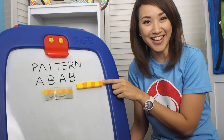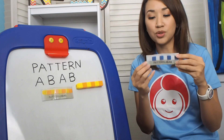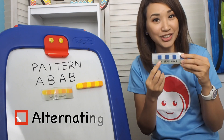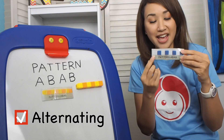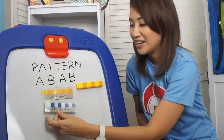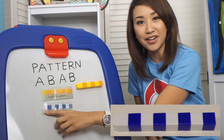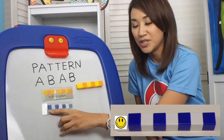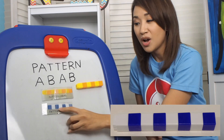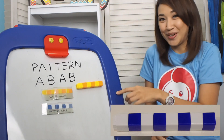Do you want to try again? Okay, this time we will do white and blue. Remember? It's alternating. A, B, A, B. Let's check. What is the first color here? White. What's after white? Blue. White, blue. White, blue. White, blue. White, blue. White, blue.